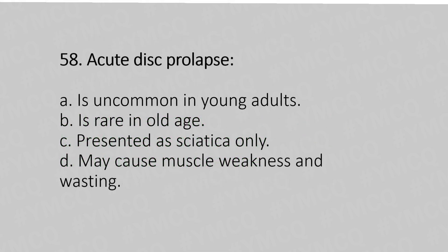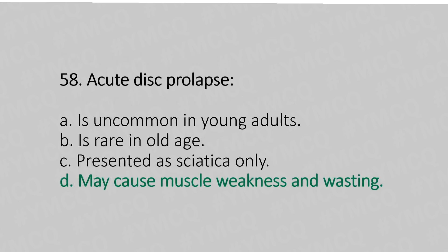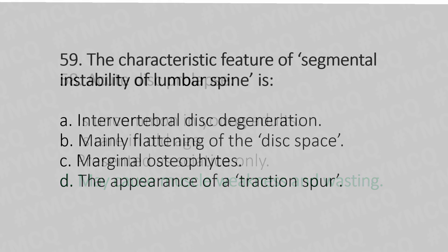Now let's move to question number 58. Acute disc prolapse: option A, is uncommon in the lumbar region; option B, is rare in voltage; option C, presents as sciatica only; option D, may cause muscle weakness and wasting. And the answer is option D: may cause muscle weakness and wasting.